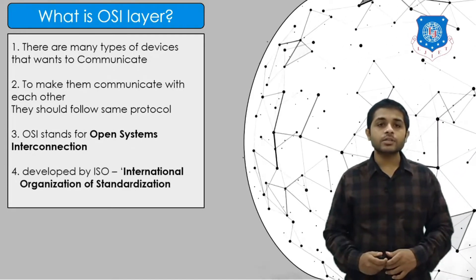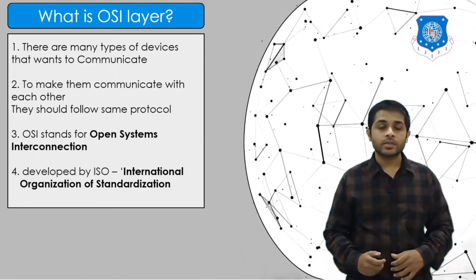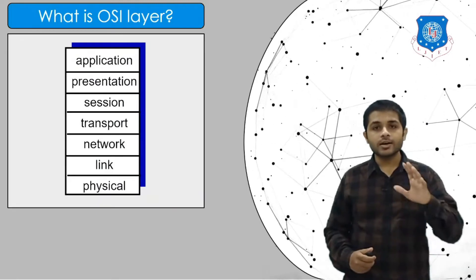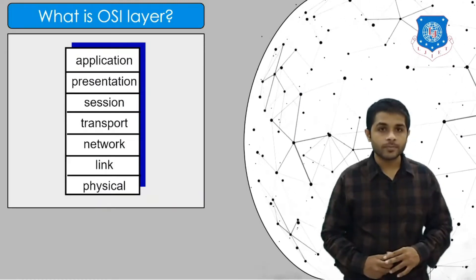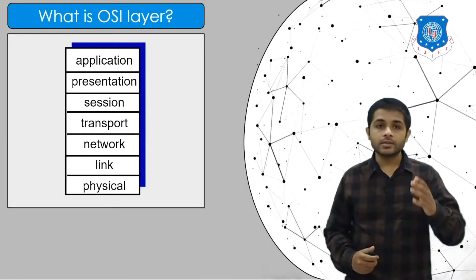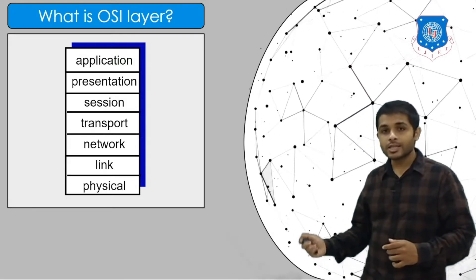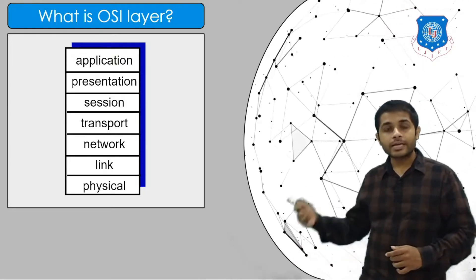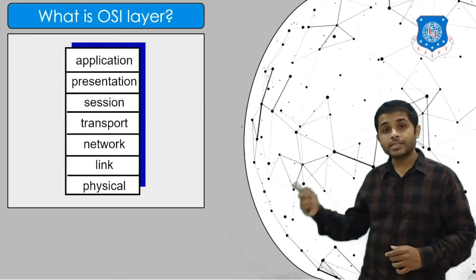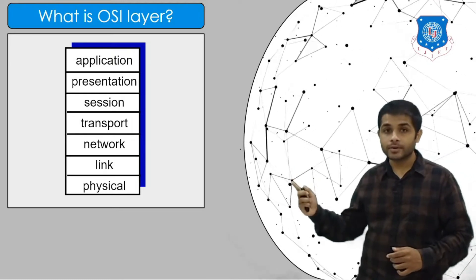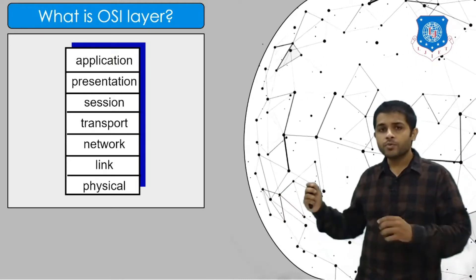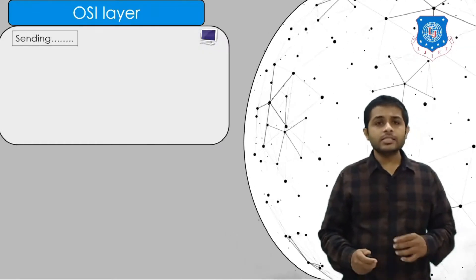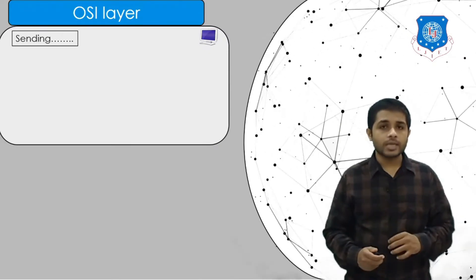OSI stands for Open System Interconnection and it was developed by the International Organization for Standardization. As you can see in the figure, this is the OSI model — there are a total of seven layers. The first is the physical layer at the bottom, after that there is the data link layer, network layer, transport layer, session layer, presentation layer, and the application layer. Each layer will have some set of protocols. Let's see the brief working of the OSI layer.